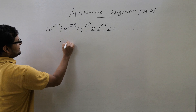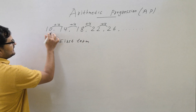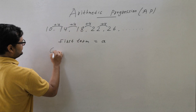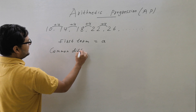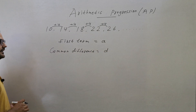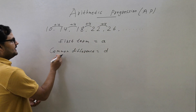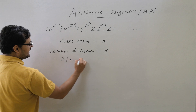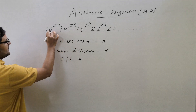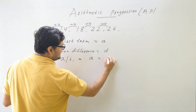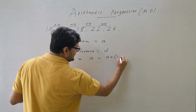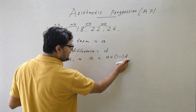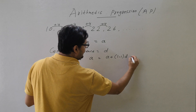The first term of an AP is denoted as A, and the common difference is denoted by D. The first term A1, also written as T1, equals A. We can write it as A plus 1 minus 1 into D, which gives A plus 0, which is simply A.